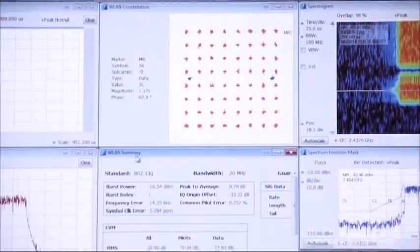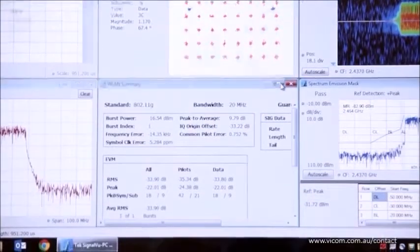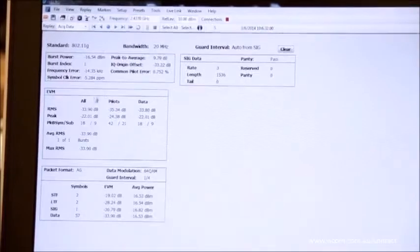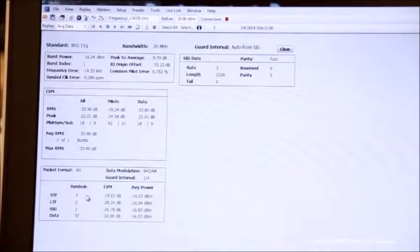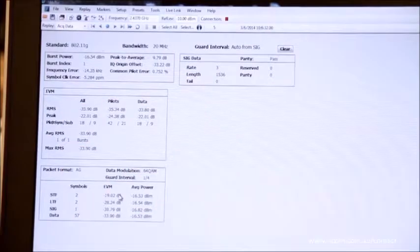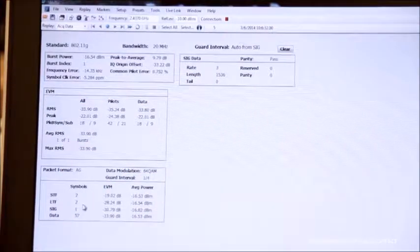So looking at the wireless LAN summary now, we'll actually be able to focus in and look at very specific characteristics of this wireless LAN burst. So inside the wireless summary here, we're actually able to see the error vector magnitude of various fields within our wireless burst.